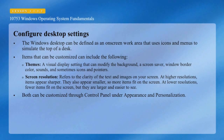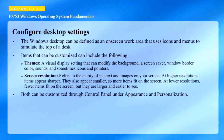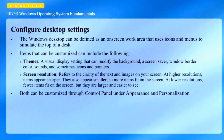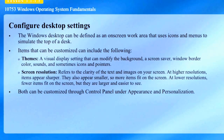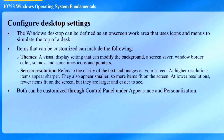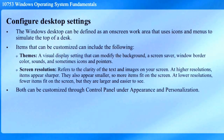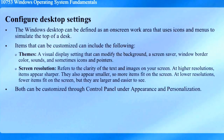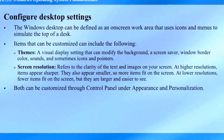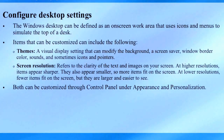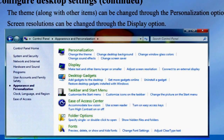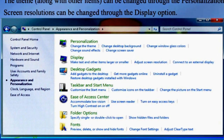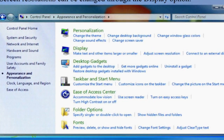The Windows desktop can be defined as an on-screen work area that uses icons and menus to simulate the top of a desk. Items that can be customized include themes — a visual display setting that can modify the background, screen saver, window border, color, sounds, and sometimes icons and pointers. Screen resolution refers to the clarity of text and images on your screen. At higher resolutions, items appear sharper but smaller, so more items fit on screen. At lower resolutions, fewer items fit but they are larger and easier to see. Both can be customized through Control Panel under Appearance and Personalization. You can change the theme by selecting the Personalization option, and change screen resolution by selecting the Display option. A tip: right-clicking on the desktop lets you select the appropriate option from the action menu to affect personalization.